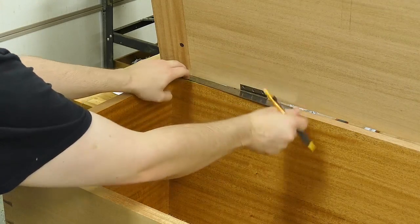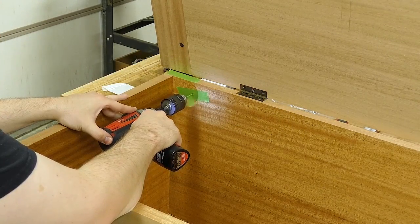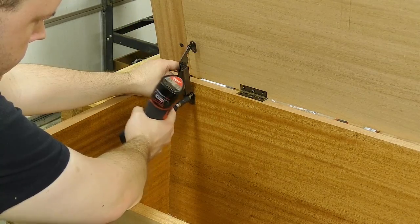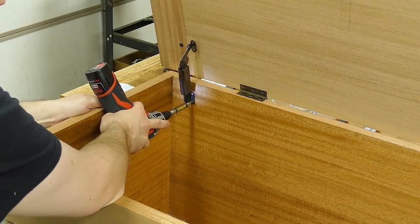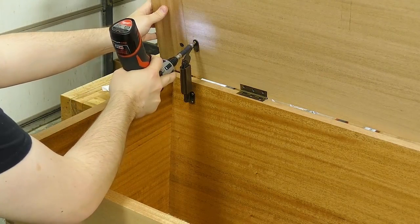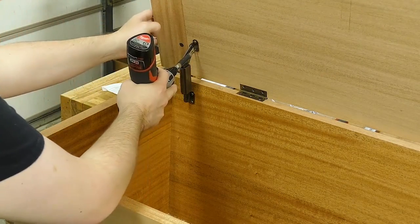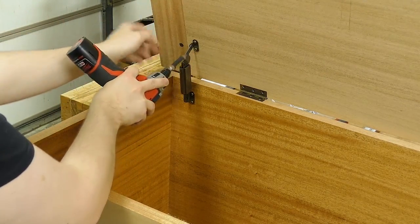Now I can install the lid supports. I begin by making a couple of reference marks to pre-drill for the screws. After installing the first screw, I use my combination square to make sure that the lid support is square and then install the second screw. And then after a couple of measurements, I install the top two screws of the lid support.